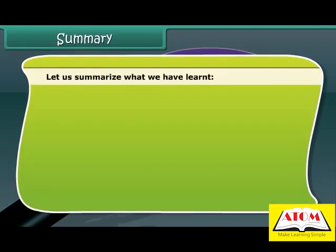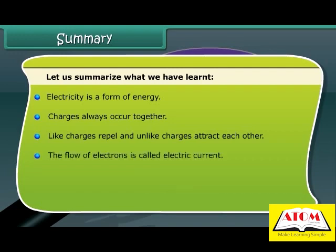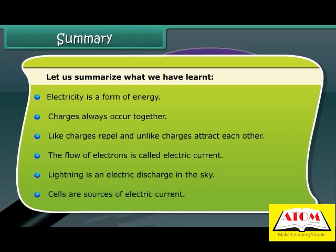Let us summarize what we have learned. Electricity is a form of energy. Charges always occur together. Like charges repel and unlike charges attract each other. The flow of electrons is called electric current. Lightning is an electric discharge in the sky. Cells are sources of electric current.